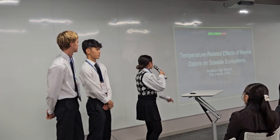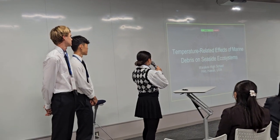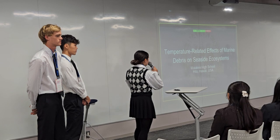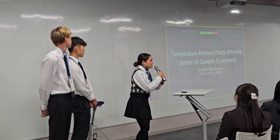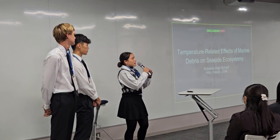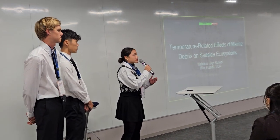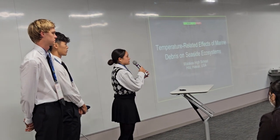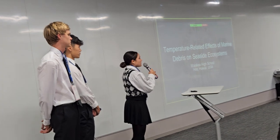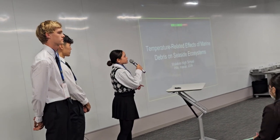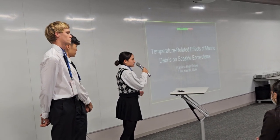This is our project: the temperature-related effects of marine debris on seaside ecosystems. Every year, around 14 million tons of plastic are dumped into our oceans. After about a month, 80% of those plastics end up on beaches.